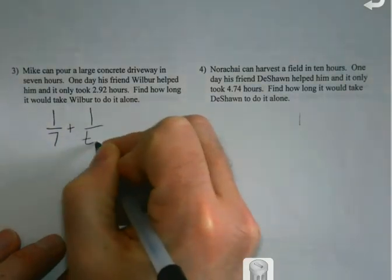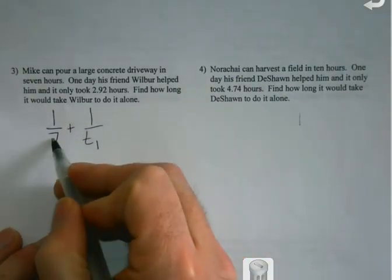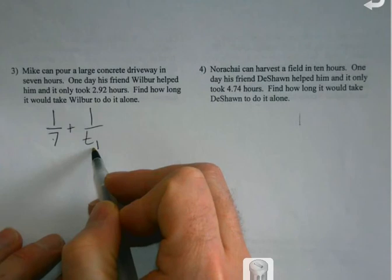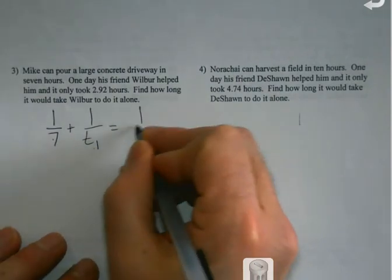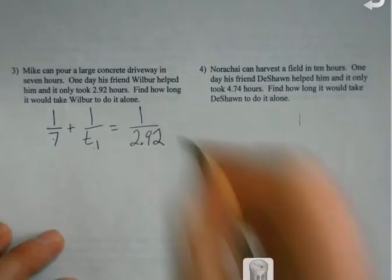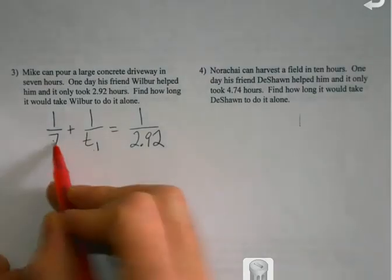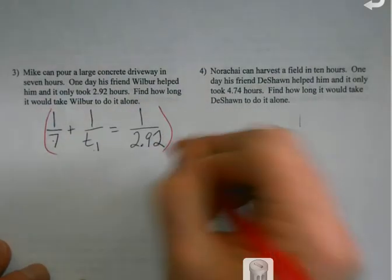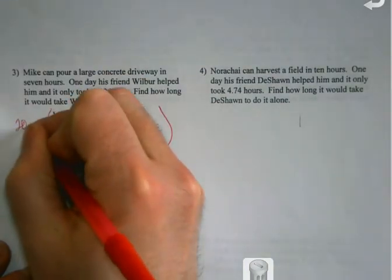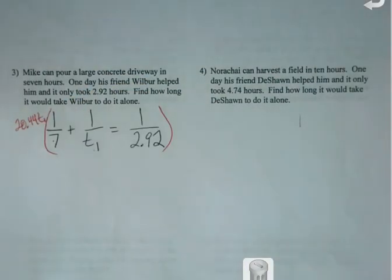Okay. So Mike plus Wilbur, who we don't know, equals them together. So notice the change here. Now it's not 1/7 plus 1 over 2.92. They're on opposite sides of the equals. So I'm going to need to multiply these two together and distribute that through.